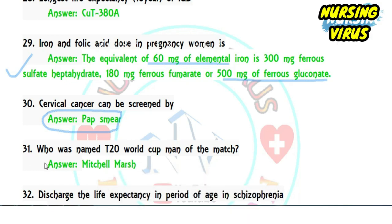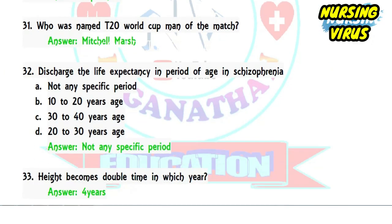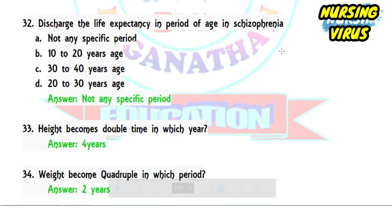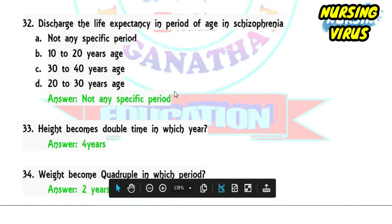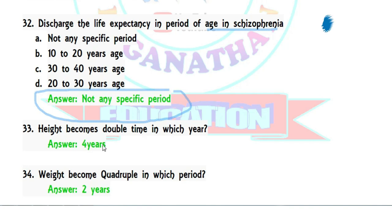Question 31: who was named Man of the Match in the 2020 World Cup final? The correct answer is Mitchell Marsh. Question 32 asked about life expectancy changes in schizophrenia patients — compared to normal individuals, there is no specific well-defined period of difference. Question 33: at which age does a child's height double? The height doubles by approximately the fourth year.